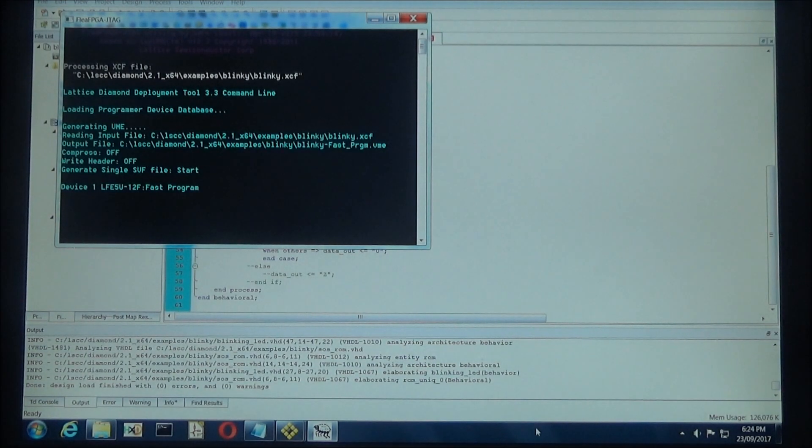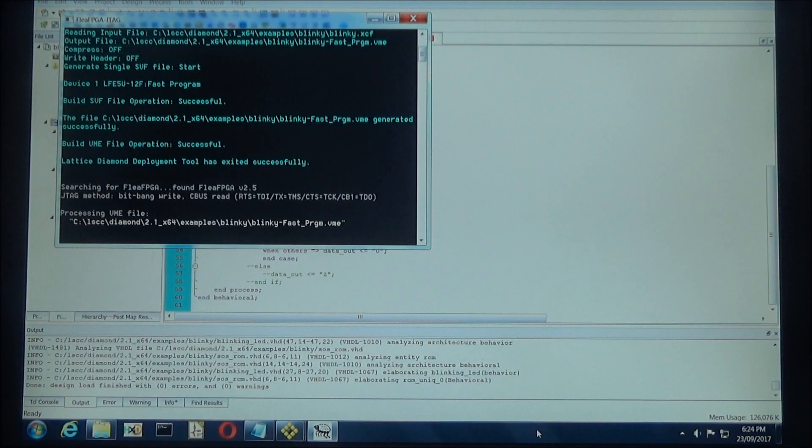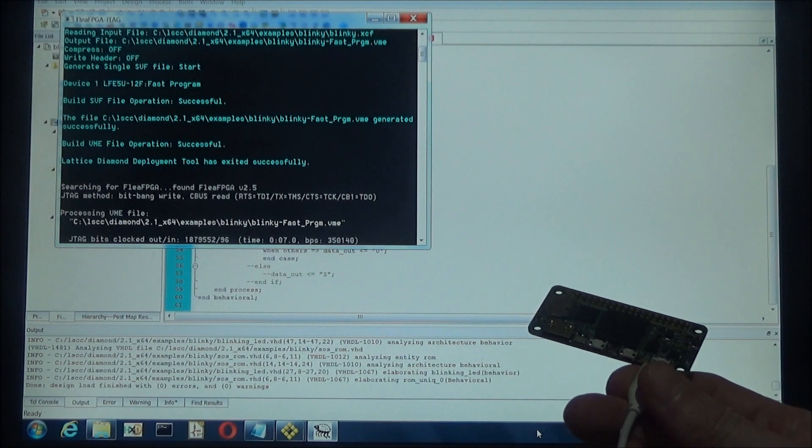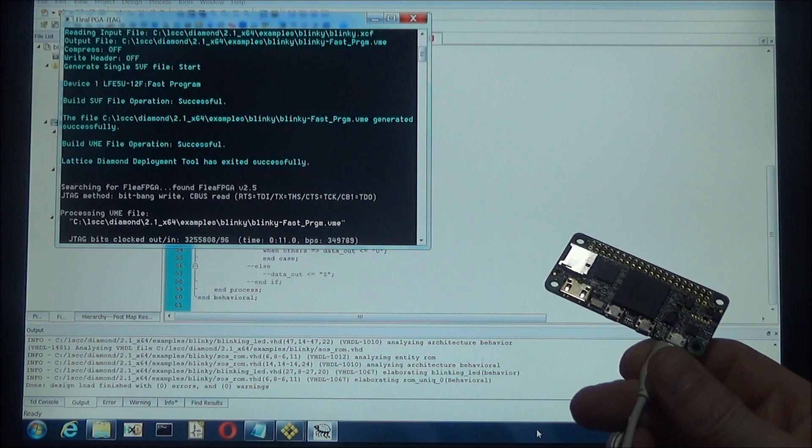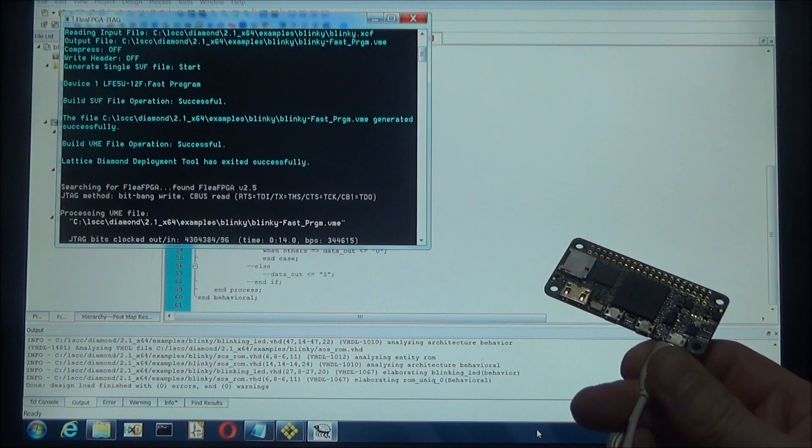The footage shows a Blinky SOS project example in the Diamond IDE that we synthesized earlier. With a simple double click of the mouse, we upload our resultant bit file to the FLIR FPGA. If our HDL is correct, we should see the user LED on the Ohm board blink out SOS in Morse code.